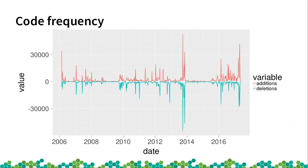You can see the code frequency. In the second part there is some relation with the previous graph, but in the first part there was also some activity although there were no pull requests. The code frequency doesn't match exactly the pull requests because the backend is also in the same repository and they are not using pull requests. That's why these two graphs look quite different.